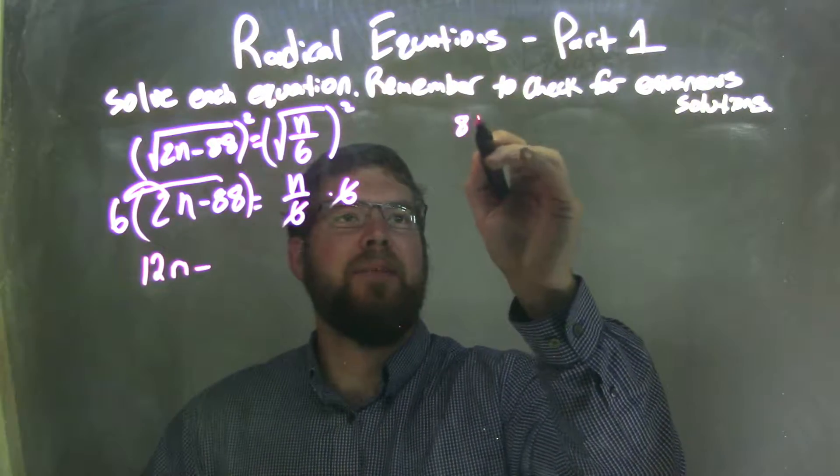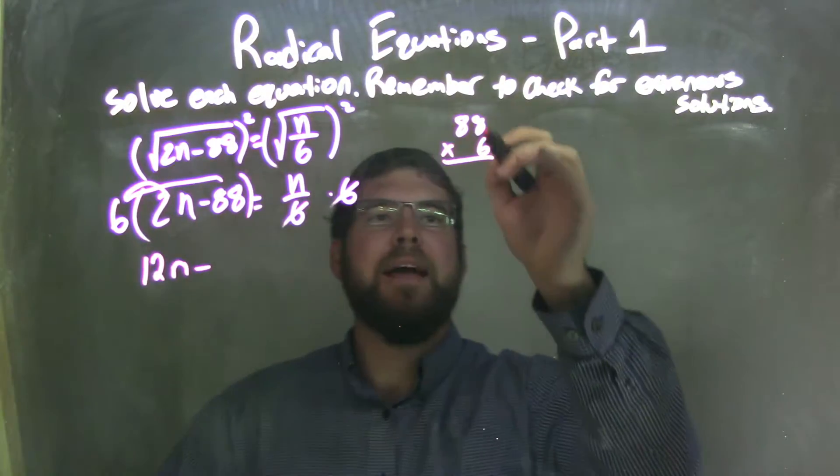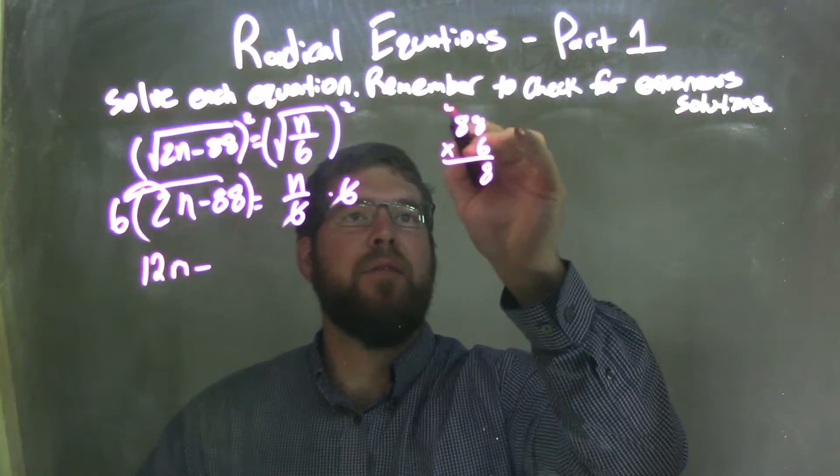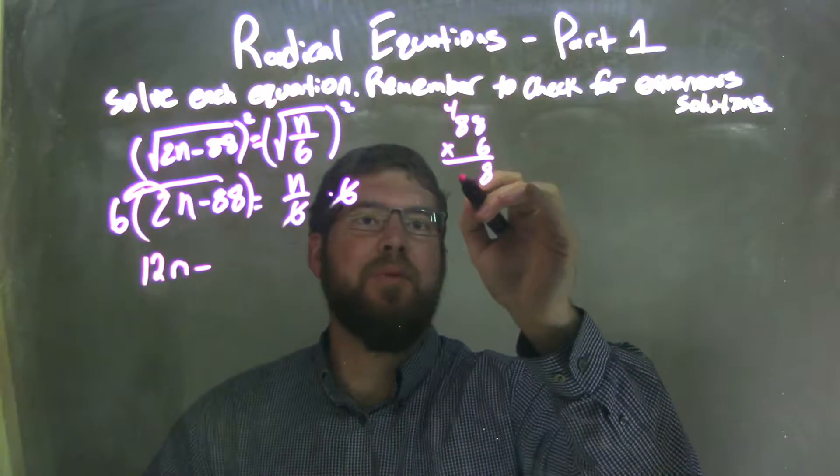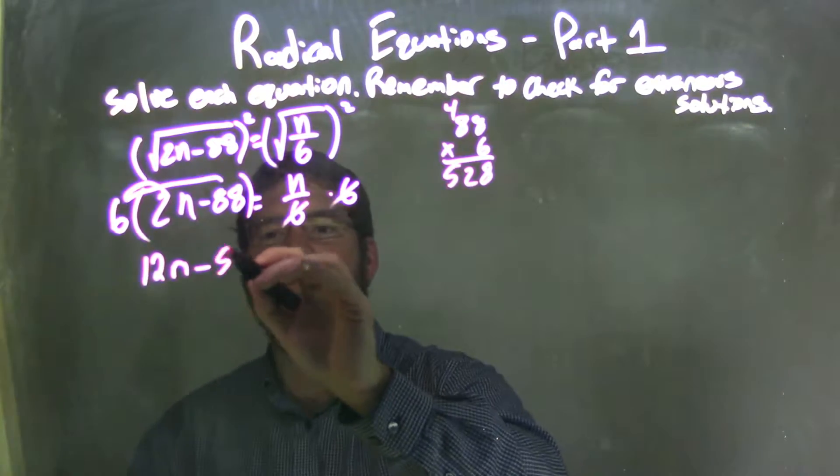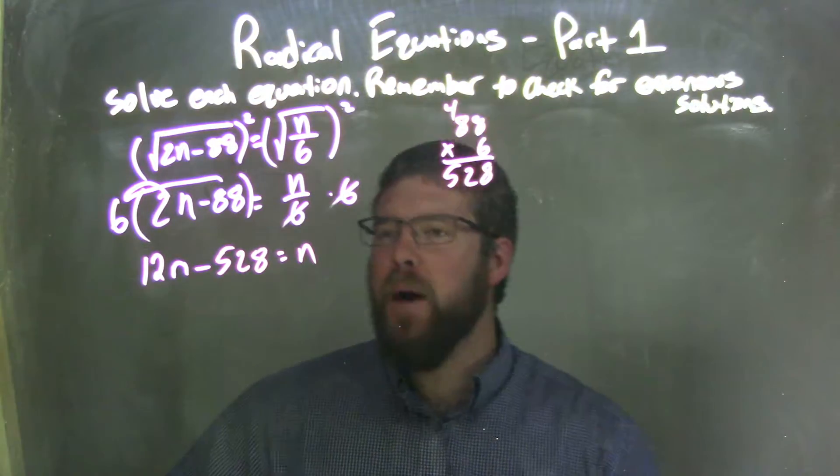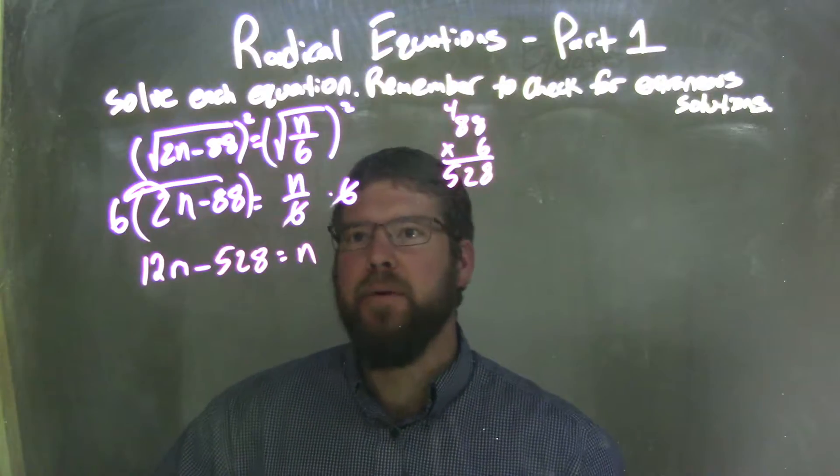88 times 6. Well, 8 times 6 is 48, carry the 4. 8 times 6 is 48, plus 4 is 52. So, we have 528 here equals n. So, that's tricky here, but we're going to take our time, take our time here.